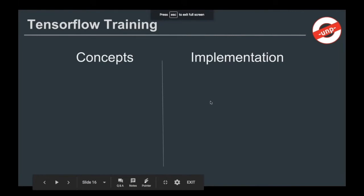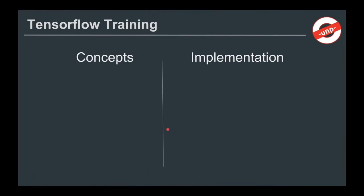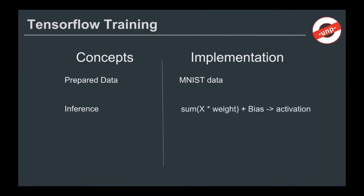What is going to be our strategy for neural networks? When doing a neural network instead of linear regression, notice that the concepts will not change — they remain intact. What will change is the implementation. We are going to prepare the data, which is our MNIST dataset — we don't need to generate data, we already have it. For inference, we take the input, multiply by the weights, sum it up, add some bias, and put it through an activation function. This is our unit of computation.